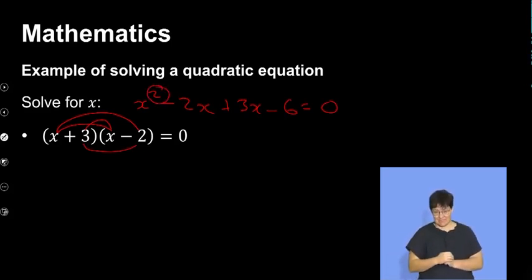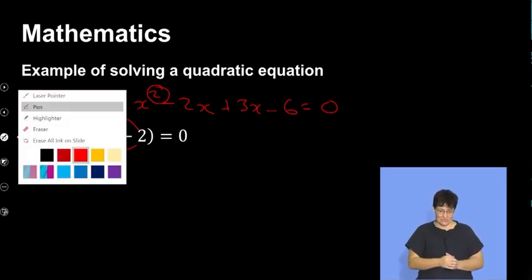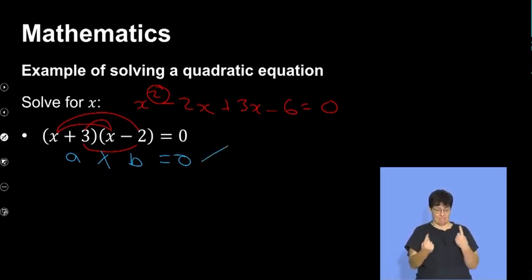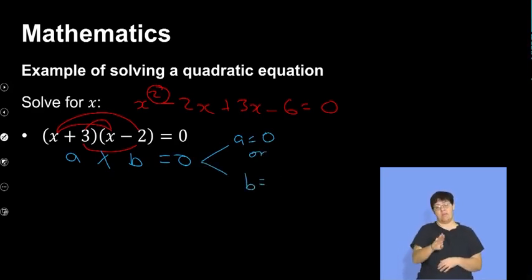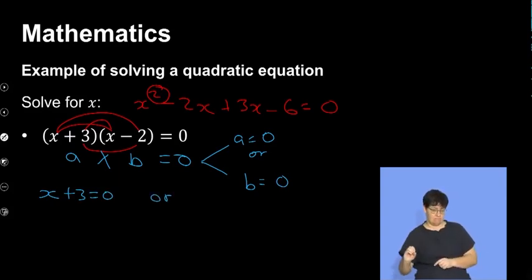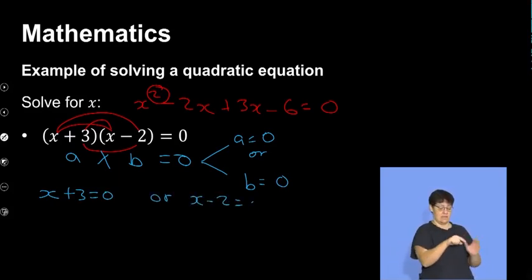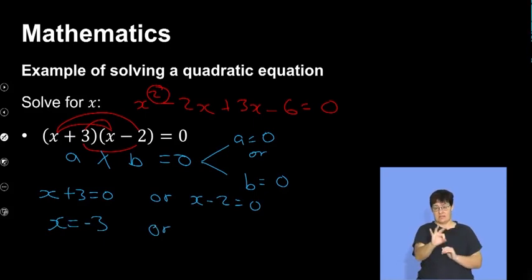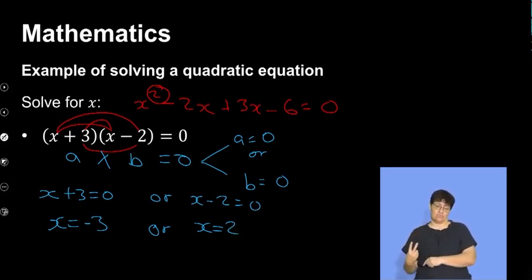Now to solve this, remember this is my a and that is my b, equal to zero with a multiply between the two. According to the zero factor law, a will be equal to zero or b will be equal to zero. So it will be x plus 3 equal to zero, or x minus 2 equal to zero. Solving for x: x equals negative 3, or x equals positive 2.